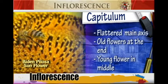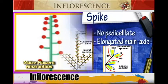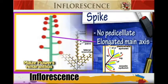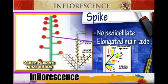We have another inflorescence which is the Spike. In the Spike type of inflorescence, there are no pedicellates and there are no stalks. The plant is elongated along the axis. We find this one in plants like Maize and Amaranthus.